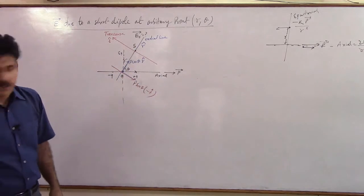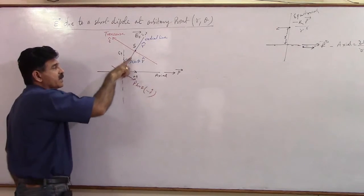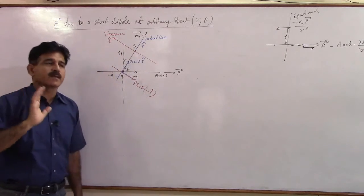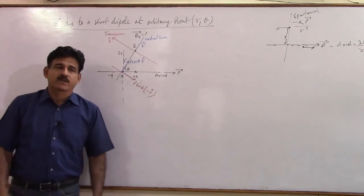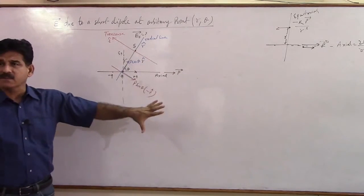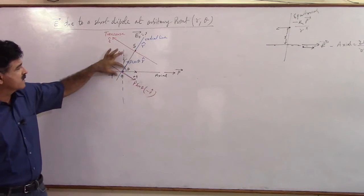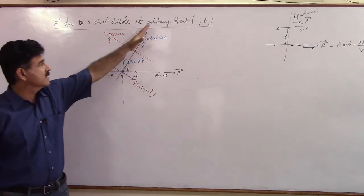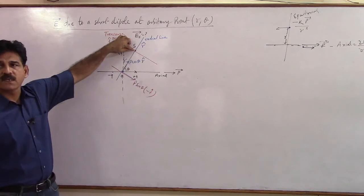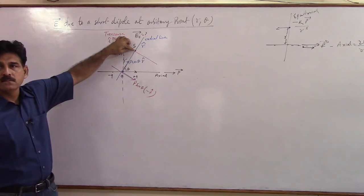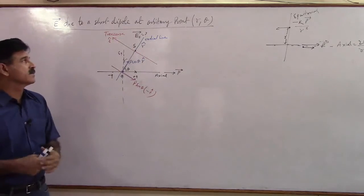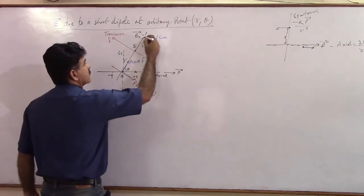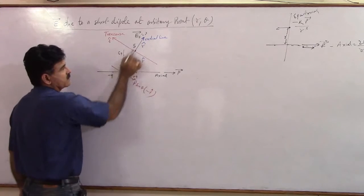And we proceed from here to see this vector, the vector is P cos theta. This P cos theta is on the axial line. And on axial line, what result do you get? So you have a field here. Due to this, how much will it be?